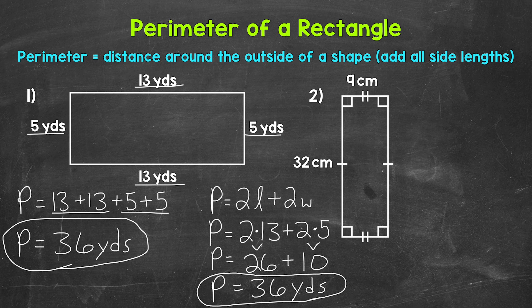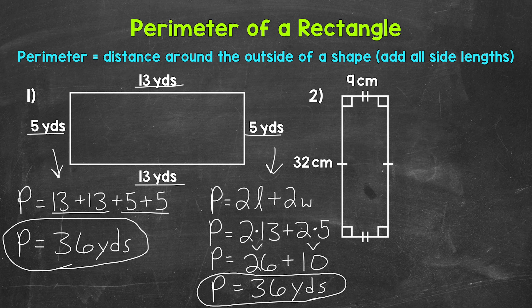So for the perimeter of a rectangle, either way will work. We can either add all of the side lengths, or we can do 2 times the length plus 2 times the width. One more thing: if we were to switch the length and the width — for example, use 5 for the length and 13 for the width — we're still going to get the correct perimeter of 36 yards. So don't get too held up on that. I used the longer side for the length.